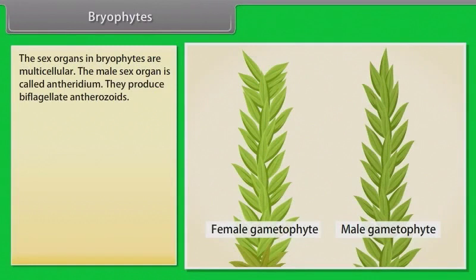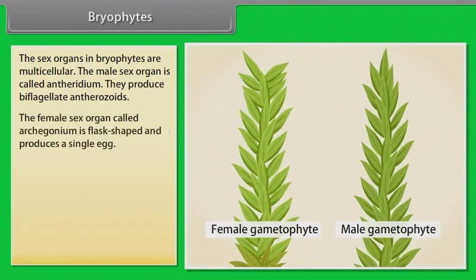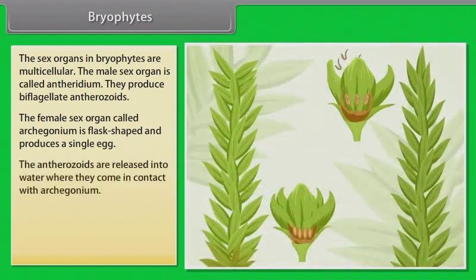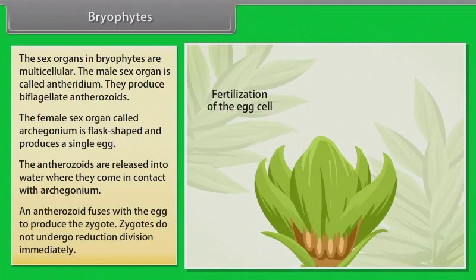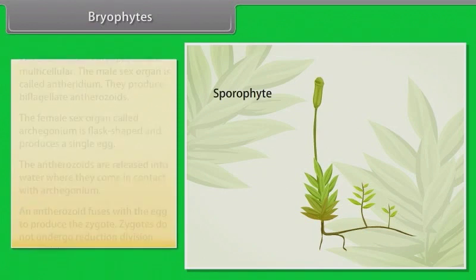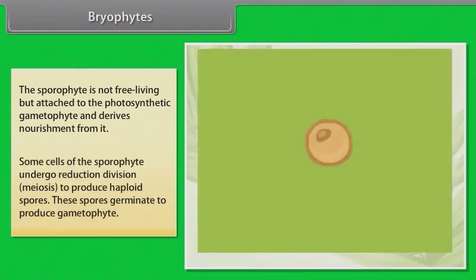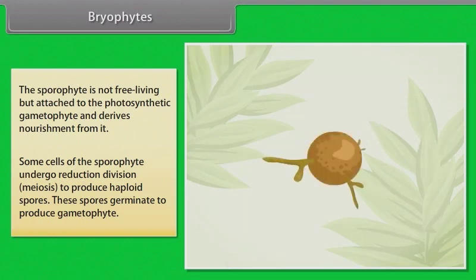The sex organs in bryophytes are multicellular. The male sex organ is called antheridium. They produce biflagellate antherozoids. The female sex organ called archegonium is flask-shaped and produces a single egg. The antherozoids are released into water where they come in contact with archegonium. An antherozoid fuses with the egg to produce the zygote. Zygotes do not undergo reduction division immediately. This sporophyte is not free-living but attached to the photosynthetic gametophyte and derives nourishment from it. Some cells of this sporophyte undergo reduction division, meiosis, to produce haploid spores. These spores germinate to produce gametophyte.